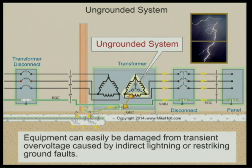Well, then there's no grounding of an ungrounded system. We're talking about system grounding. In system grounding, you could have an ungrounded system — that's a type of system grounding. But what are the problems with ungrounded systems? There's a problem with an ungrounded system: equipment can easily be damaged from transient overvoltages caused by indirect lightning and re-striking ground faults. If you heard what I just said, you should have no clue what I'm talking about. But take a look at the next slide.